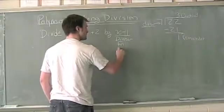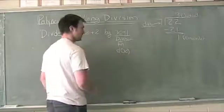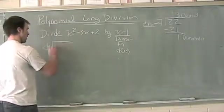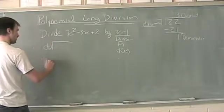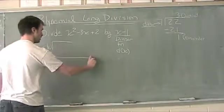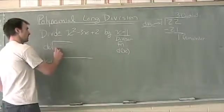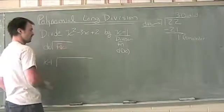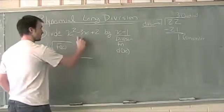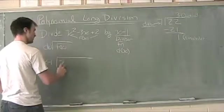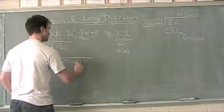We're going to set d of x up on the outside, so x minus 1 goes on the outside. What we put on the inside is the thing being divided—call it f of x. For us, f of x is x squared minus 3x plus 2.